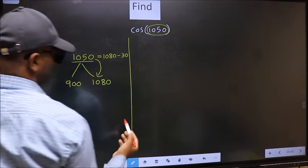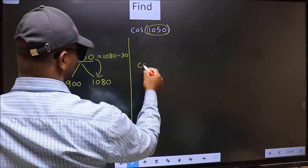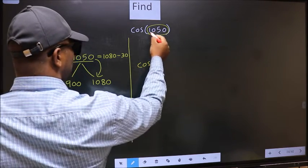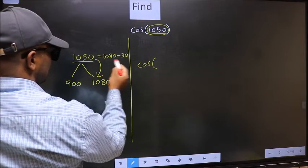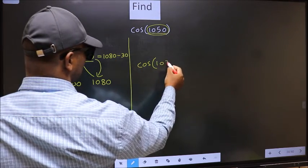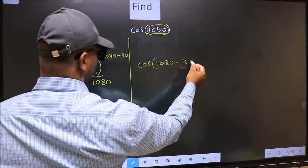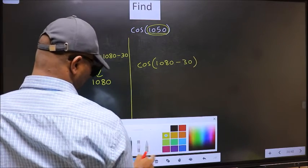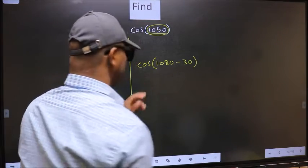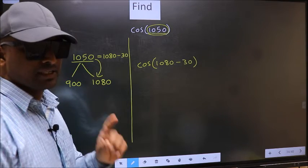So 1050° now should be written as 1080° - 30°. So this will become cos, in place of this, we should write this: 1080° - 30°. This is your step 1.